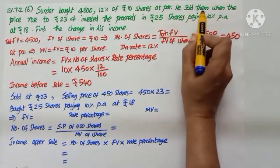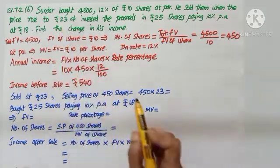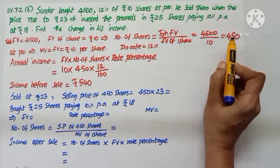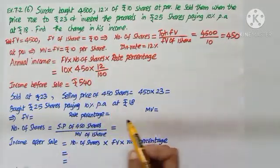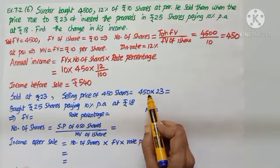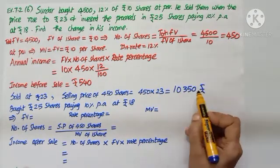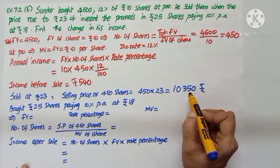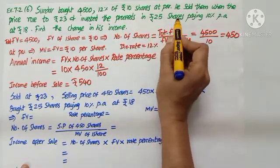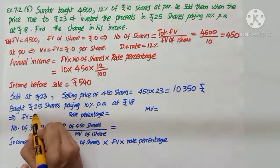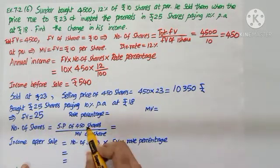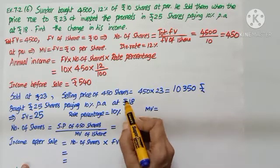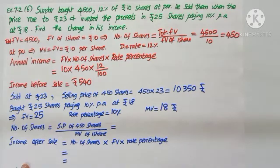Now we proceed to the second line. He sold them when the price rose to Rs. 23. He is holding 450 shares; selling one share at Rs. 23, so selling price of 450 shares is 450 into 23. He gets Rs. 10,350. With this amount he is investing in Rs. 25 shares. Face value is Rs. 25, rate percentage is 10%, and at Rs. 18 tells us market value is Rs. 18.